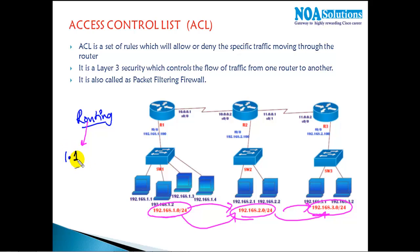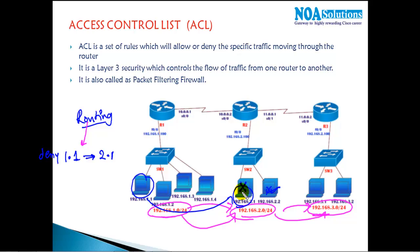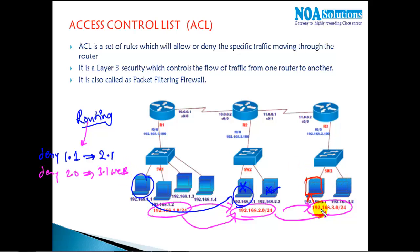Now with ACLs, let's say I want a specific host 1.1 to not communicate with 2.1 — I want to deny that traffic. But 1.1 can still communicate with other devices, just not that specific one. Or you can write a rule like: deny the 2.0 network from accessing the 3.1 web service.